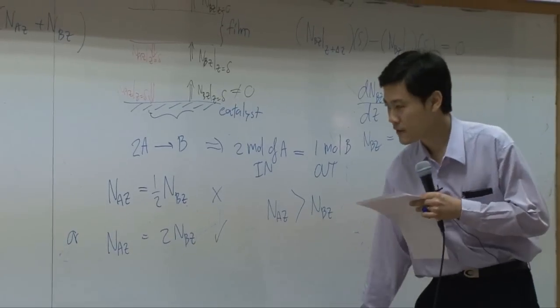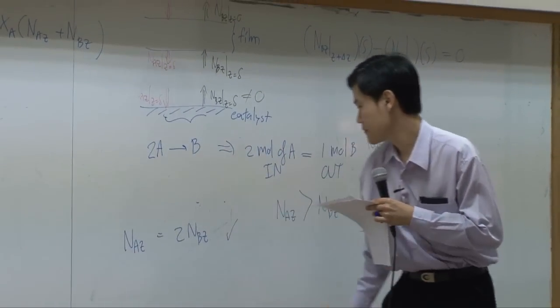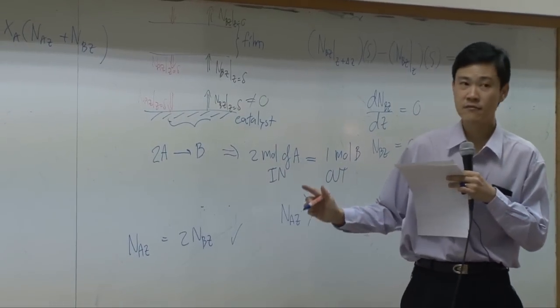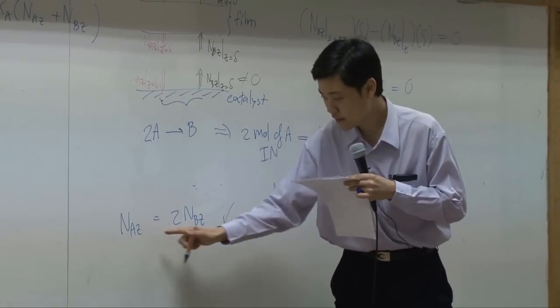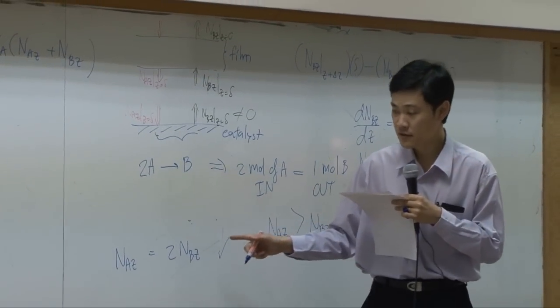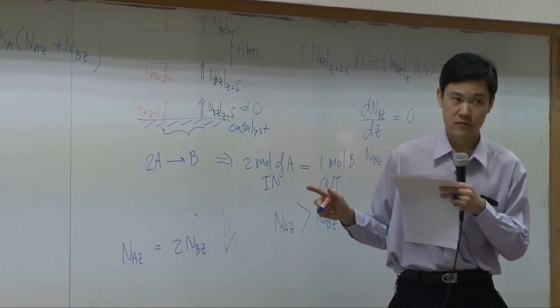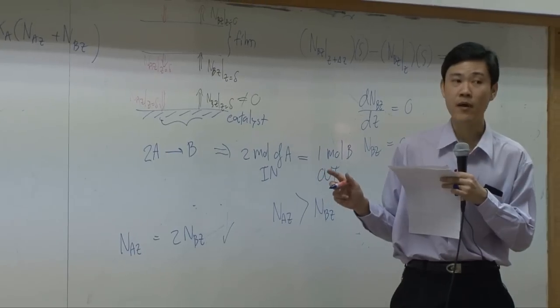Now, so I'm going to cross this out and say that we can write down relationship between flux of A and flux of B. However, fluxes are vectors. So we need to specify direction as well.